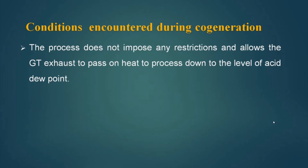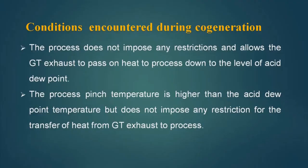Let us analyze the conditions encountered during cost generation. The first point: the process does not impose any restriction and allows the GT exhaust to pass heat to the process down to the level of the acid dew point. If it is not imposing any restriction, this is a free problem and easier to tackle. The second situation may be that the process pinch temperature is higher than the acid dew point temperature but does not impose any restriction for the transfer of heat from GT exhaust to process. We have seen how to tackle this — we can use the recuperator to bring it down so it crosses the acid dew point.